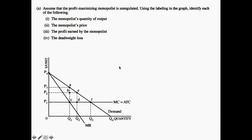Let's go ahead and move on to Part A and answer the first question. Assume that the profit-maximizing monopolist is unregulated. Using the labeling in the graph, identify each of the following. We know that marginal revenue is equal to marginal cost, and intuitively this makes sense because a monopolist has market power. The place where marginal revenue equals marginal cost happens right here, and so Q1 is going to be the quantity in which the monopolist would set if it were profit-maximizing — Q1 is the quantity of output.